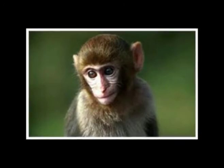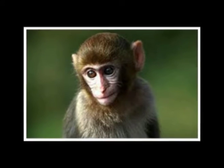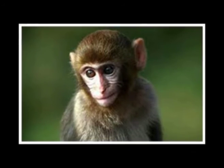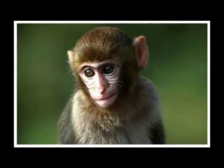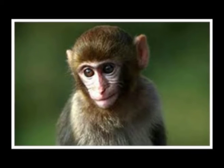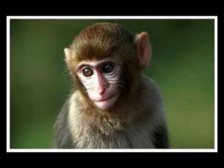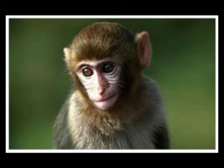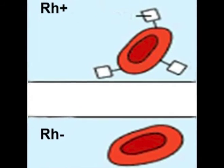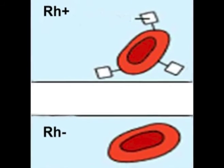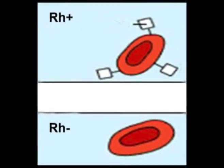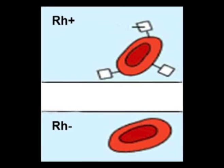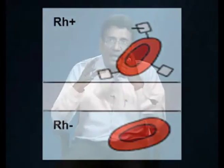The RH system was named after the Rhesus monkey, since they were initially used in the research to make the antiserum for typing blood samples. If the antiserum agglutinates with an individual's red cells, then that individual is RH positive. If it does not, then they are RH negative.